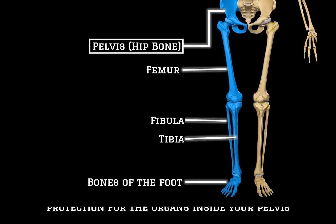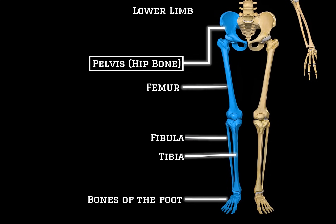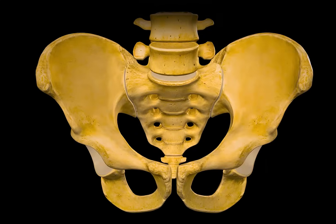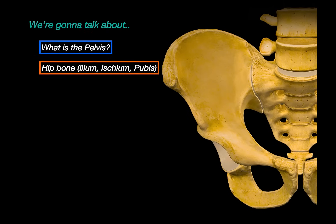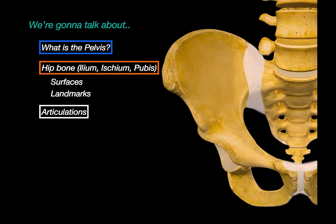The hip bone is the first topic in our lower limb skeletal series. In this video, we're going to go through what is considered the pelvis, the pelvic planes, and then break down all three parts of the hip bone, the surfaces and landmarks. Then we will talk a little bit about the articulations around, like the sacroiliac joint, the pubic symphysis, and so on.